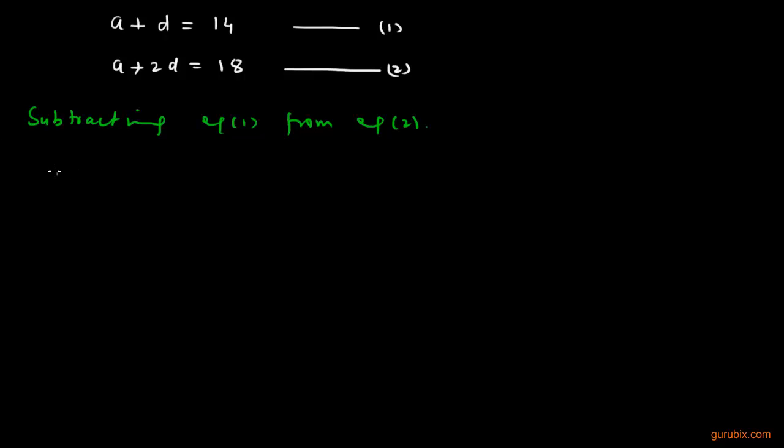We get a plus 2d minus a plus d equals to 18 minus 14. This equals 4. We get a plus 2d minus a minus d. We can cancel out this negative a with this positive a, and when we subtract d from 2d we get d, and that equals 4.